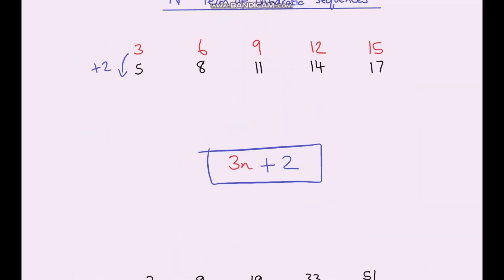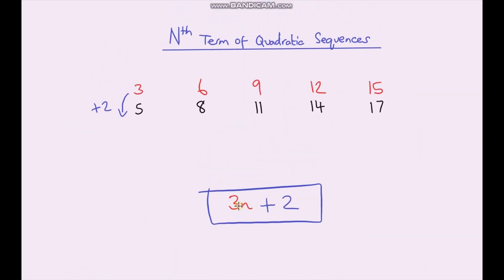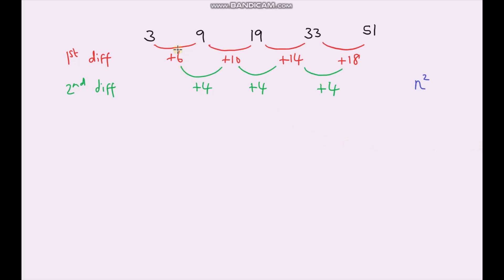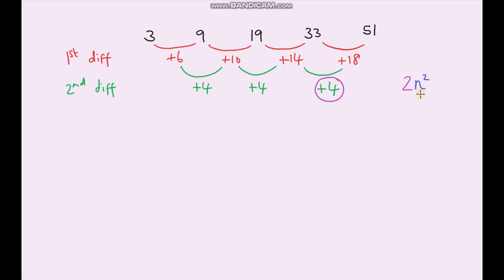Just like before with our arithmetic sequence — where the first difference being the same gave us n — here the first difference is different but the second difference is the same, so it's n squared. The second difference is 4, so we half this number and put it in front of our n squared term. Our sequence is going to start with 2n squared.